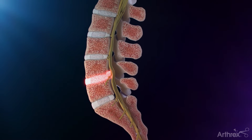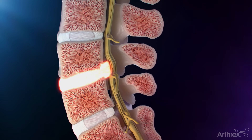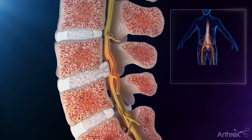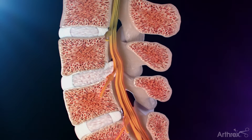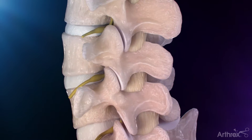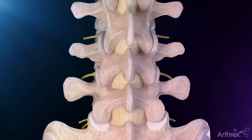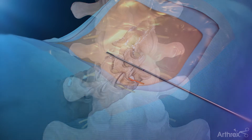In most cases that require surgical intervention, the herniation pushes out and against a nearby nerve root as it extends out from the spinal column to your legs. This nerve compression is what causes reduced neurological function and therefore pain in one or both legs.